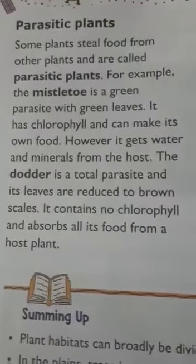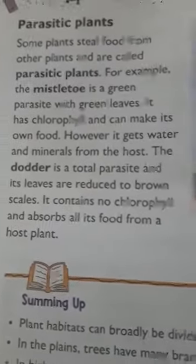Next are parasitic plants. Parasite means depending on others. Some plants steal food from other plants and are called parasitic plants. For example, mistletoe is a green parasite with green leaves — it has chlorophyll and can make its own food, but it gets water and minerals from the host. Dodder is a total parasite whose leaves are reduced to brown scales; it contains no chlorophyll and absorbs all its food from a host plant.